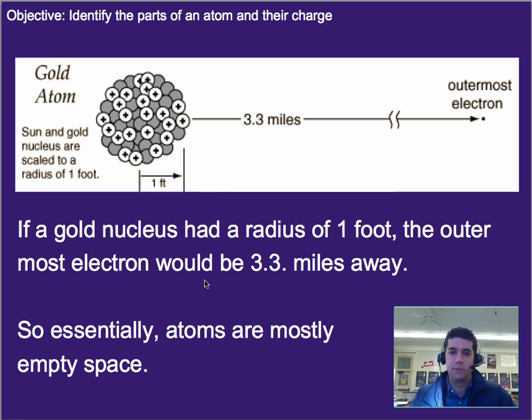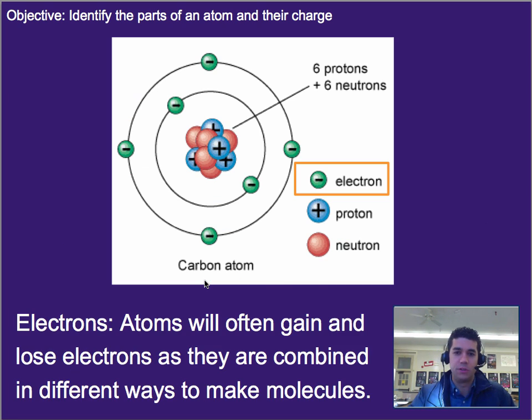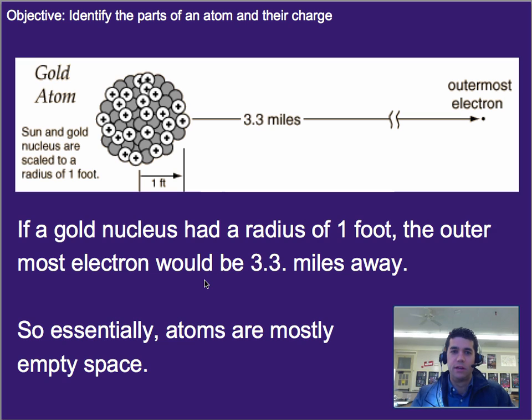Now, I talked a little bit about how the image we were looking at before is slightly inaccurate. This one isn't exactly to scale, but it tells you the distances of what to scale would be. So if we took a gold nucleus, I believe gold is the 79th element on the periodic table. It means it has 79 protons in there. If we took a gold nucleus and we made the radius, that is from the center to the edge, one foot wide.